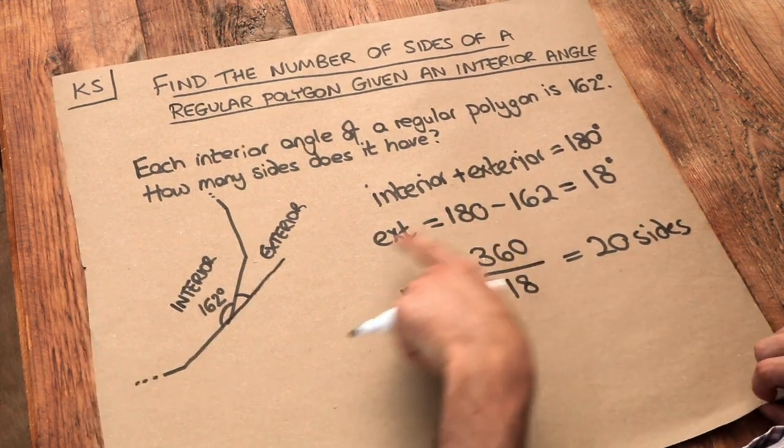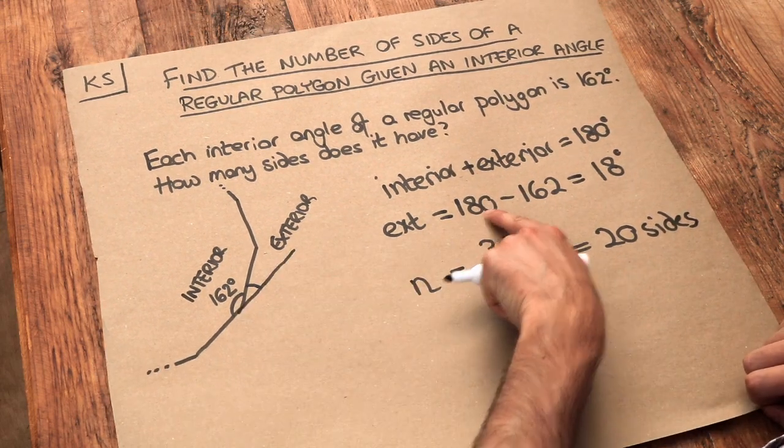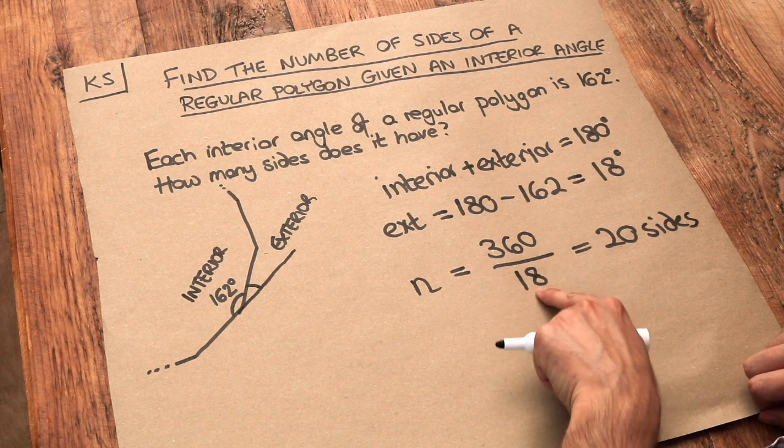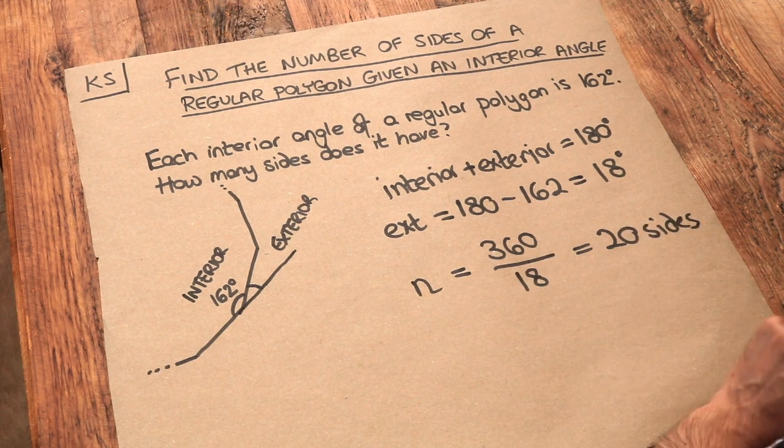So just to reiterate, you take your interior angle, subtract it from 180 to get the exterior angle, and then do 360 divided by that exterior angle to get the number of sides.